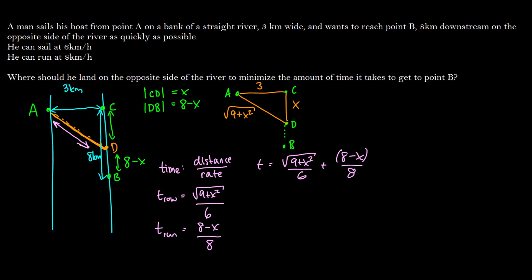So we have square root of 9 plus X squared divided by 6 plus 8 minus X, all divided by 8. And now we have a time function. So of course, when we have our time function, what do we have to do to minimize it? We have to take its derivative.